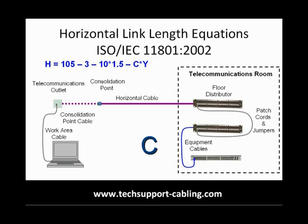C equals the length of the consolidation point cable. For the sake of this exercise, let's make C equal to 12m.